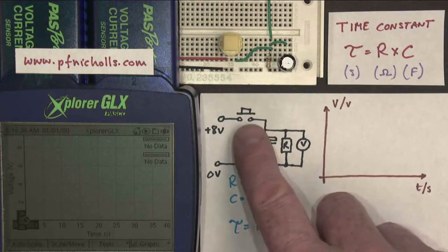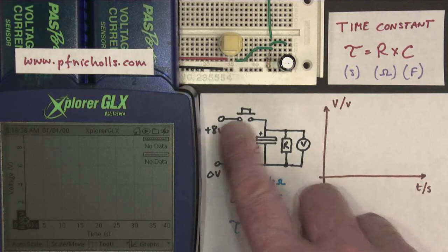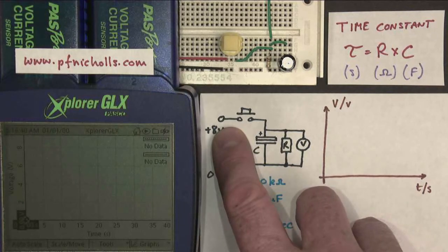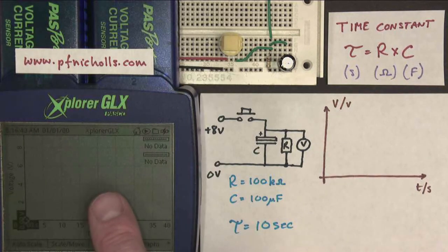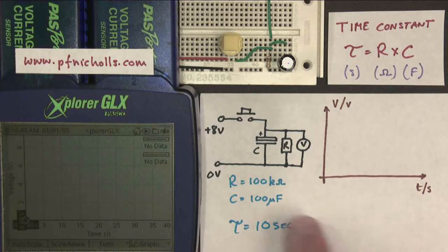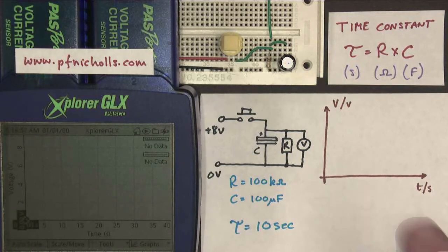I have a push button which attaches the capacitor and resistor combination to 8 volts and a voltmeter to see what happens. This is my voltmeter. At the moment I'm using 100 kilo ohms and 100 microfarads as my two values, and let's see what happens when we press the button.